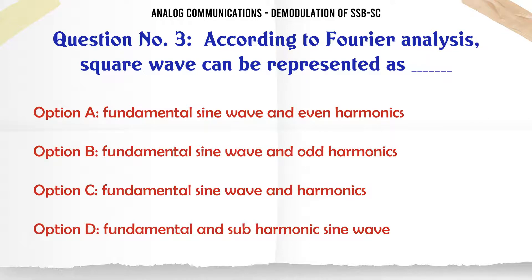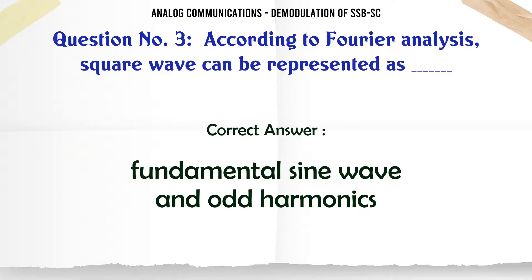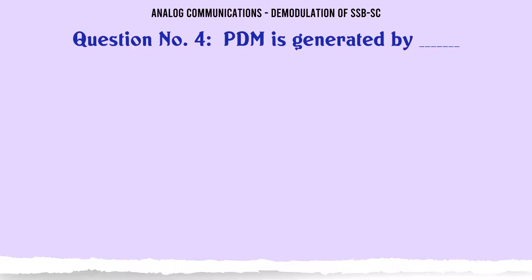According to Fourier analysis, a square wave can be represented as: A. Fundamental sine wave and even harmonics, B. Fundamental sine wave and odd harmonics, C. Fundamental sine wave and harmonics, D. Fundamental and sub-harmonic sine wave. The correct answer is fundamental sine wave and odd harmonics.